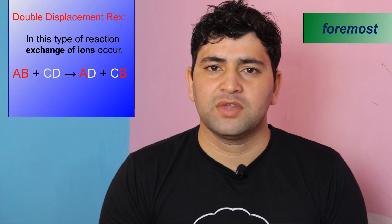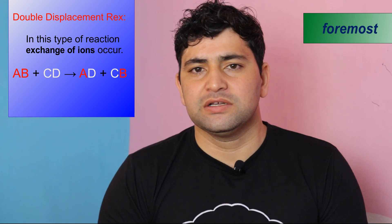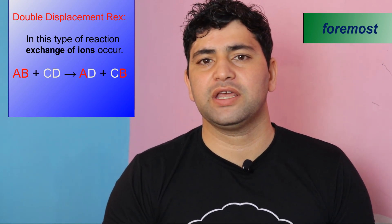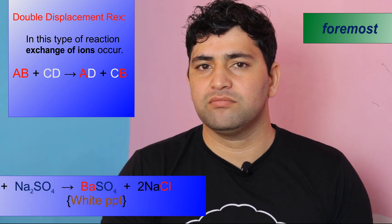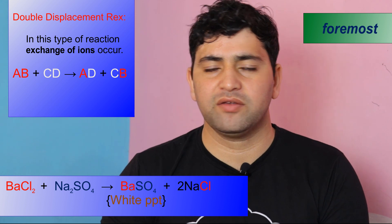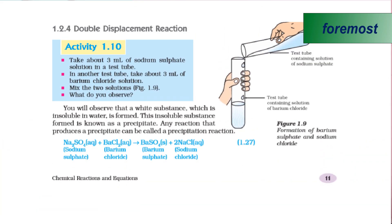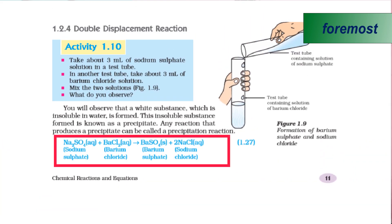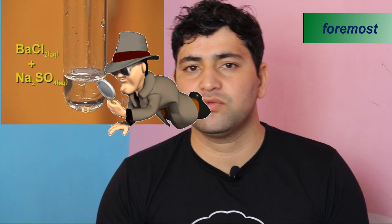Double displacement reaction. In this type of reaction, exchange of ions takes place — one ion replaces the position of a second one, and the second ion takes the position of the first. For example, barium chloride reacts with sodium sulfate to form barium sulfate and sodium chloride. Barium replaces the position of sodium, and sodium replaces the position of barium. In this solution, you will see barium sulfate as a white precipitate.